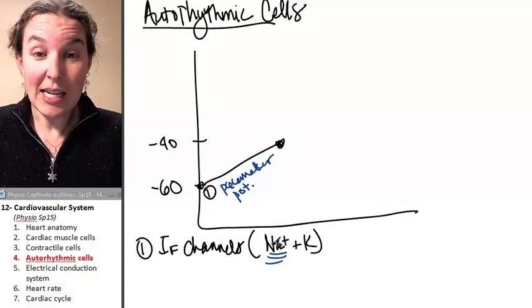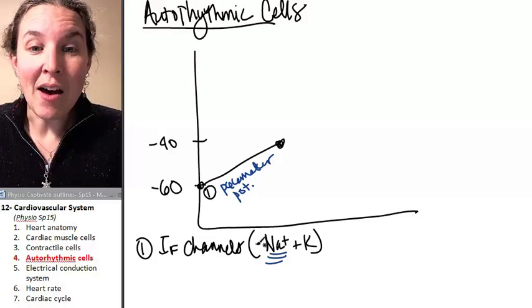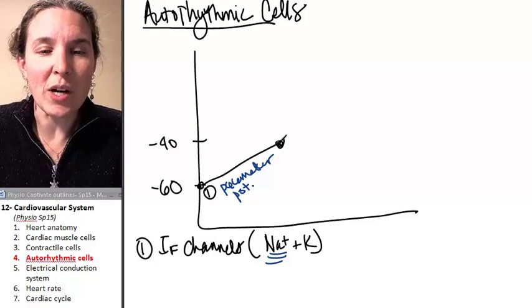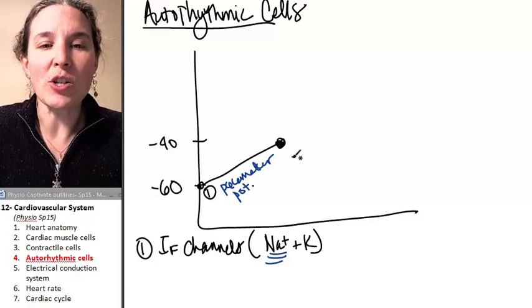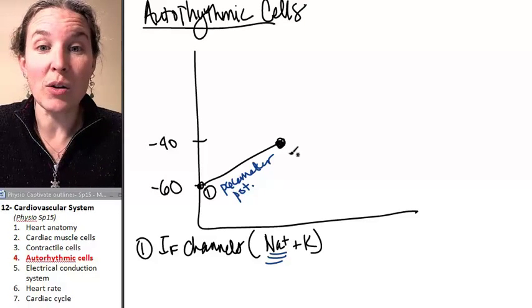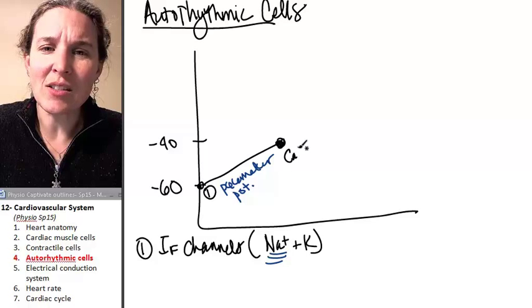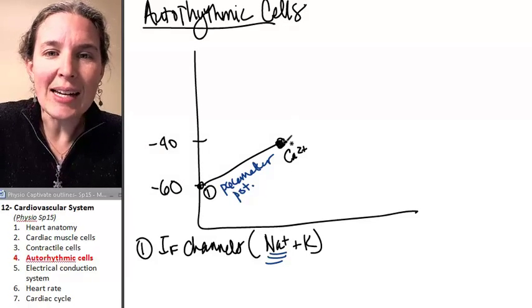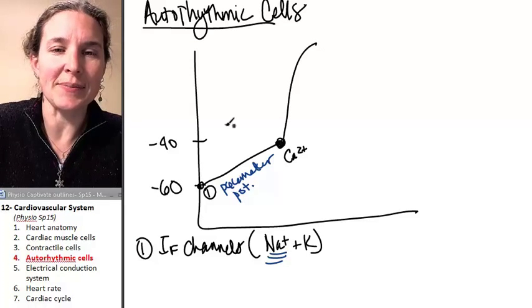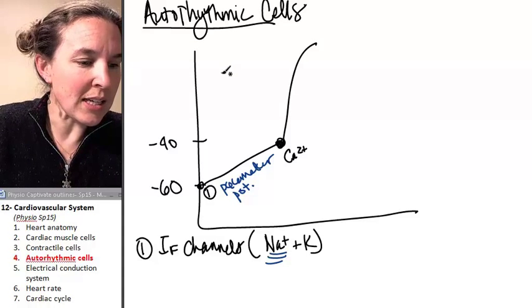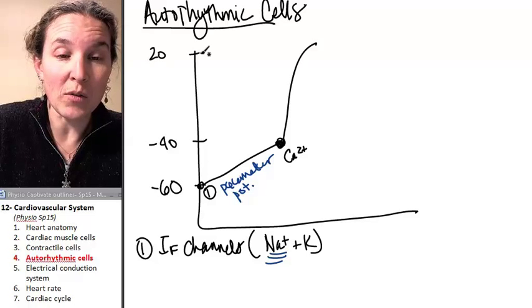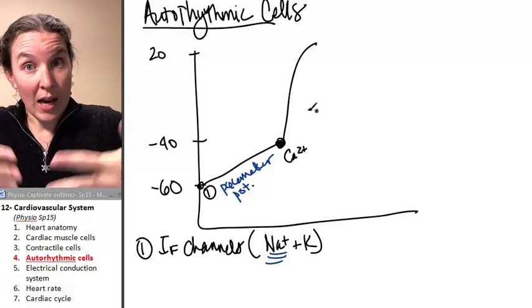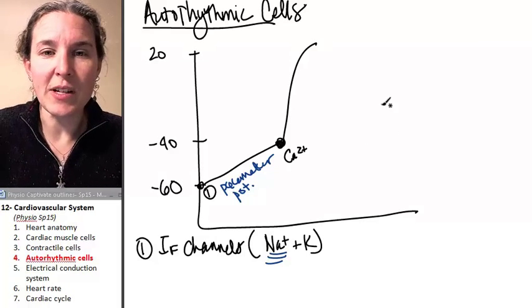And once we reach threshold, funny channels close. And guess what kind of channels open? Calcium channels open and calcium rushes in. Calcium rushes in until we reach about 20 millivolts. Calcium comes in. We become more positive. This makes perfect sense.